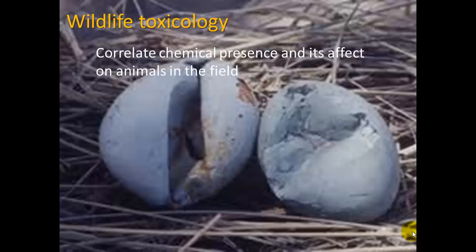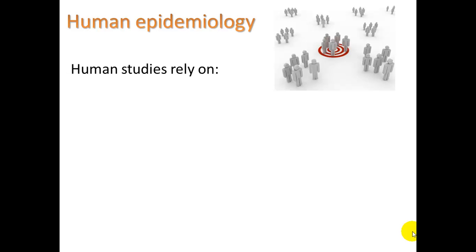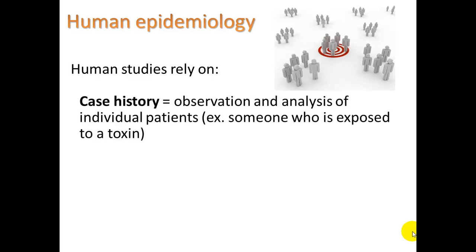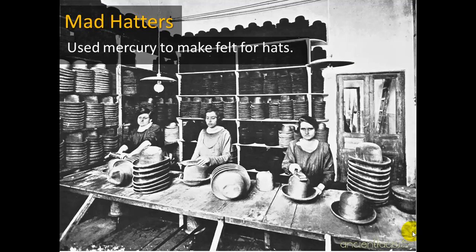Here's a picture of some bird eggs. Wildlife toxicology correlates chemical presence and its effect on animals in the field — example: DDT. Human epidemiology relies on case histories, observing and analyzing individual patients. For example, someone exposed to a toxin is followed for the next 10 years or so to see how it affects them. Epidemiological studies involve long-term, large-scale comparisons of different groups — example: smokers versus non-smokers. One example is the mad hatters, who used mercury to make felt for hats about 100 years ago, and they would go crazy because mercury is a heavy metal neurotoxin.